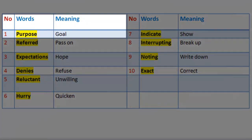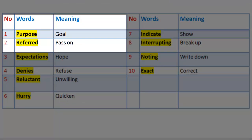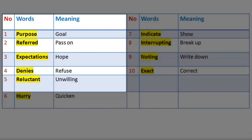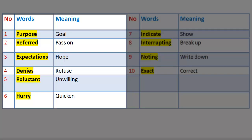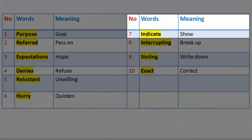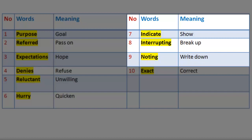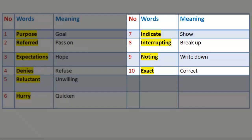Vocabulary 1. Purpose: goal. Referred: pass on. Expectations: hope. Denies: refuse. Reluctant: unwilling. Hurry: quicken. Indicate: show. Interrupting: break up. Noting: write down. Exact: correct.